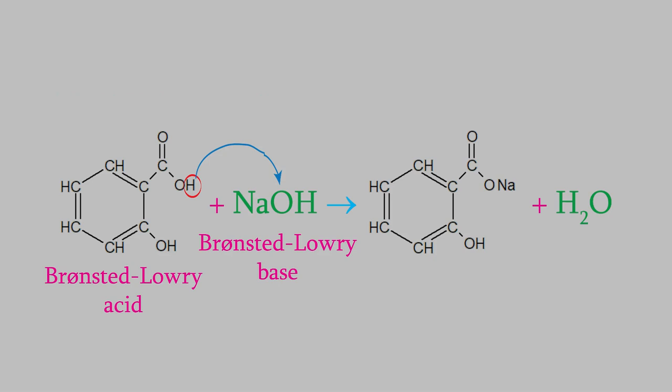There are a couple of other things to know about reactions like this before we move on. First of all, let's look at the products. After the acid gives away its hydrogen atom, the resulting product is called the conjugate base. Also, after the base accepts the hydrogen, the molecule that results is called the conjugate acid.